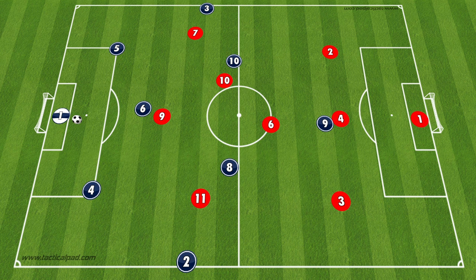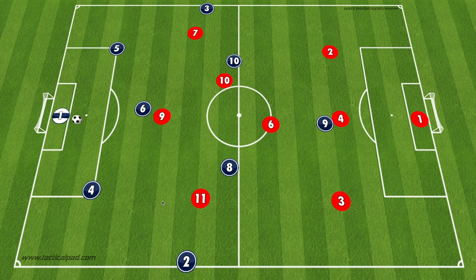Just a quick recap: our formation has our keeper, our back line of two center backs and two fullbacks who play wide, our defensive center midfielder — the six — two attacking center midfielders who we like to keep central, and our striker. The team defending us is in a 3-2-3, which is the most common formation we're going to play against this year, so this will be representative of situations we'll get into.